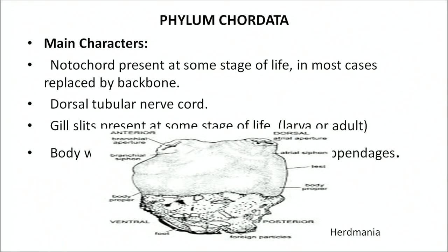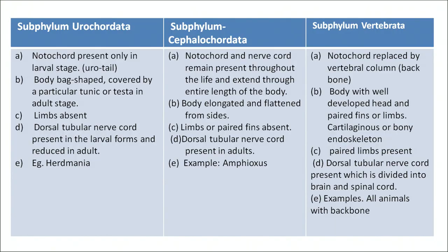Adults are radially symmetrical but larvae are bilaterally symmetrical. The next phylum is phylum Chordata. The main characteristics are: notochord is present at some stage of life — in most cases replaced by a backbone; a dorsal tubular nerve chord is present; and gill slits are present at some stage (larval or adult). Body has a head and trunk, and two pairs of appendages are present. It has three subphyla: Urochordata, Cephalochordata, and Vertebrata.